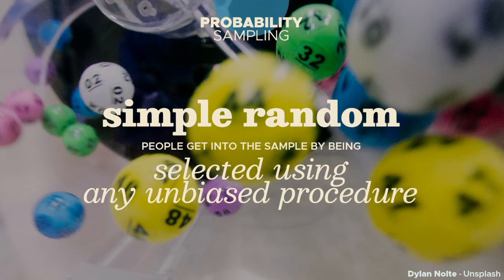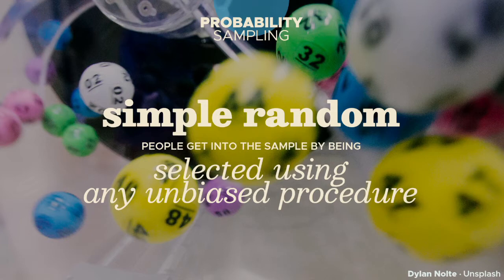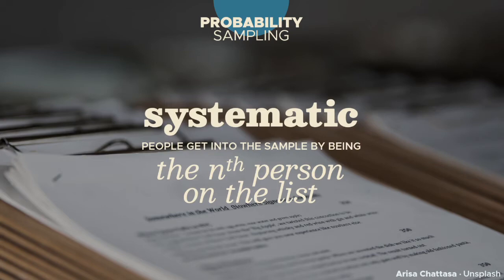The most common probability sampling strategy is called simple random sampling. The easiest way to do this is to put everyone's name on a piece of paper, put all the papers in a container, shake it, and pull out as many names as you need. Or let a computer go through a list of everyone in your population. Simple random sampling isn't very practical, though, because it's not often that you're allowed to have everyone's names — data privacy acts and all.